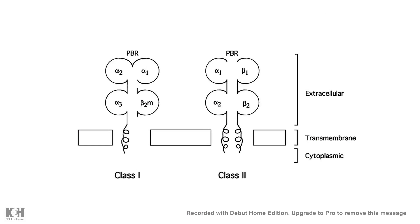At a structural level, class 1 MHC has one big alpha chain which contains sub-domains alpha 1, alpha 2, and alpha 3. Alpha 3 is the domain which interacts with the T cell co-receptor CD8.